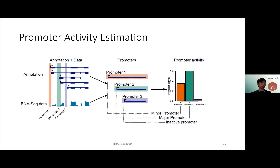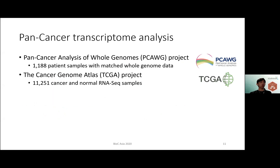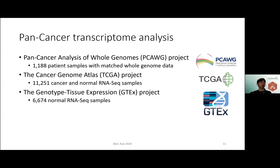This is a summary of how ProActive works. Once the promoters are identified and quantified, we can measure how active each promoter is at the gene level. We applied ProActive to a pan-cancer transcriptomic analysis using data from three projects: the PCAWG, TCGA, and GTEx projects. In total, we had about 18,000 samples covering over 40 cancer types.